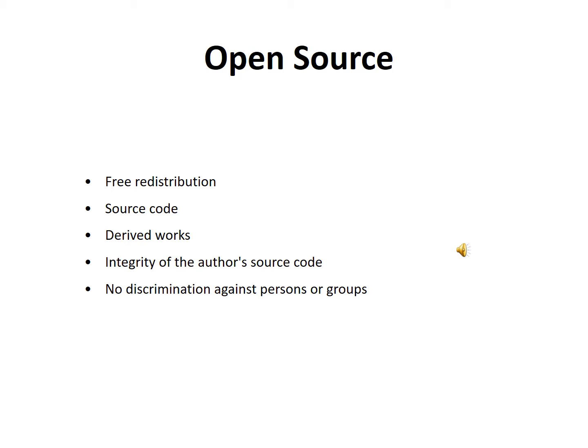Some software is open source. Open source means that the public can access the software freely. The software can be fully redistributed, and open source software also includes non-discrimination against persons or groups. This is a key feature of open source software.